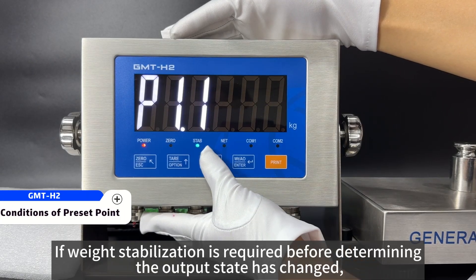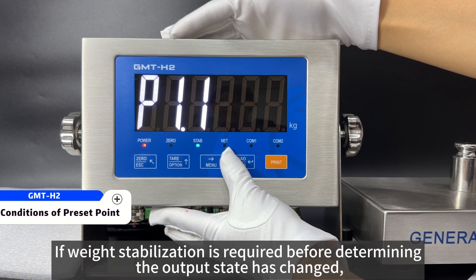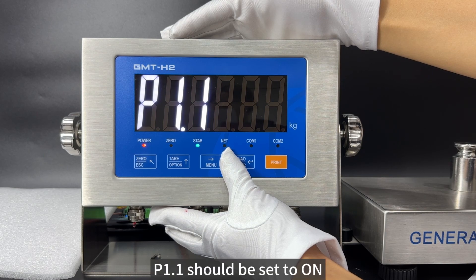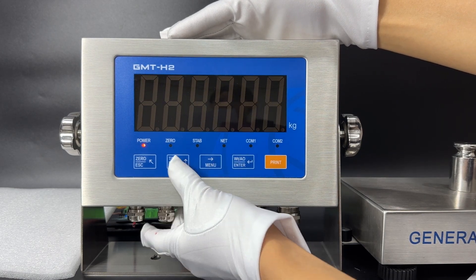If weight stabilization is required before determining the output state has changed, P1.1 should be set to 1, and vice versa.